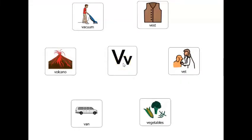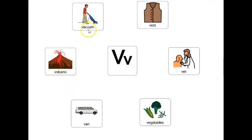Letter v makes the sound v. Here are six words that start with the letter v. You can say them after me. Vest, vet, vegetables, van, volcano, vacuum.